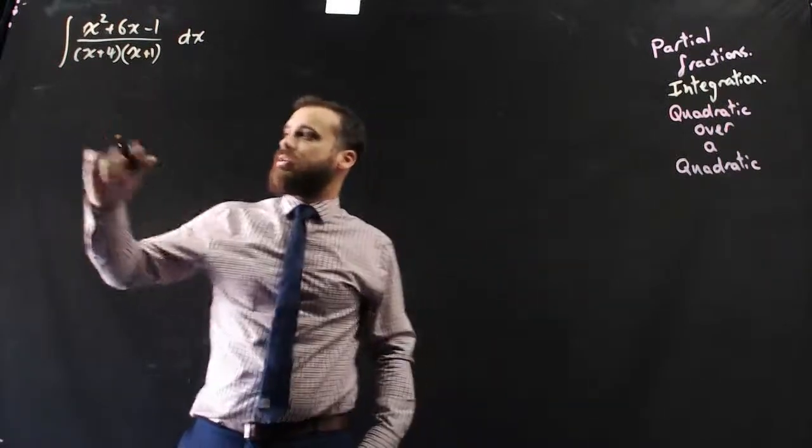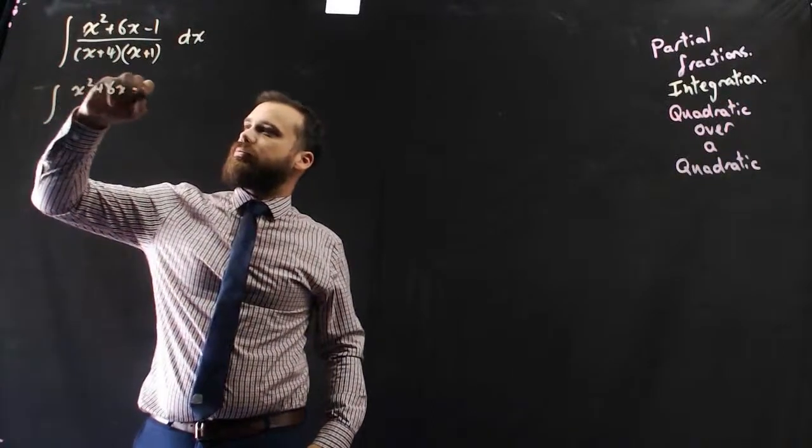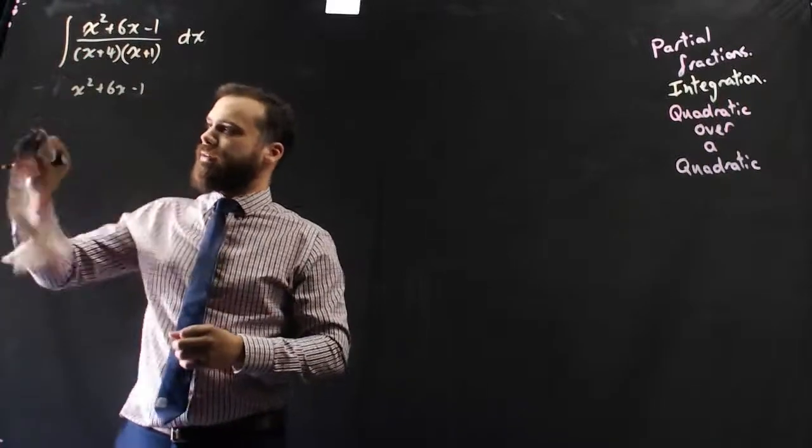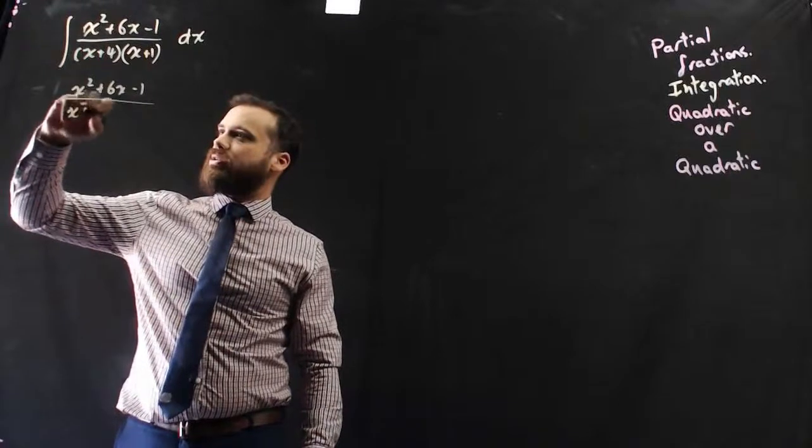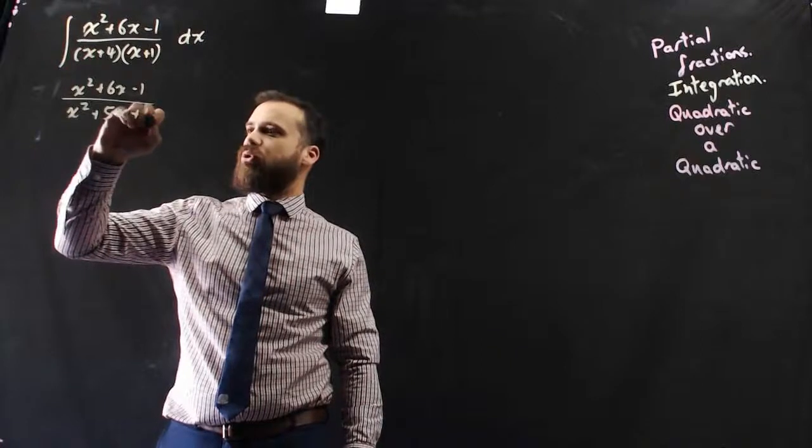So what we can do instead is expand the bottom and you'll see why in a minute. Actually, let's not bother with the integration, let's just deal with the fractions for now. So we've got x squared plus 6x minus 1 over x squared plus 5x plus 4.